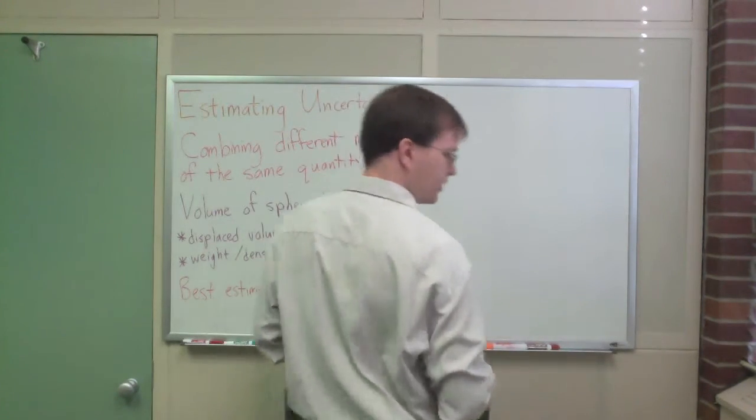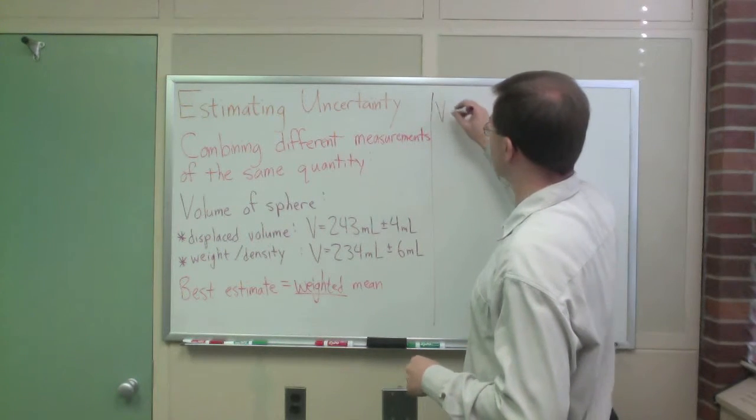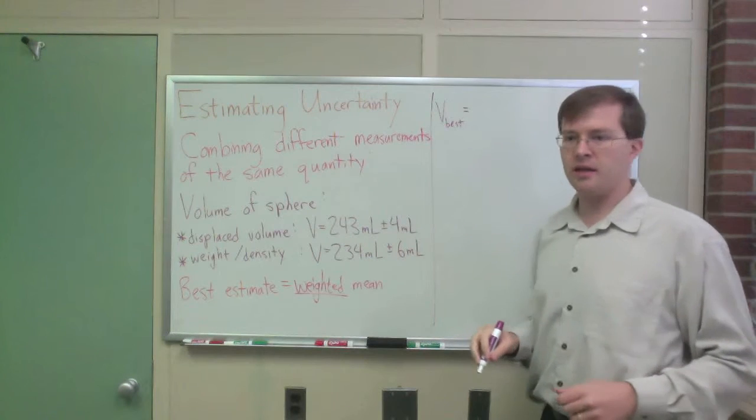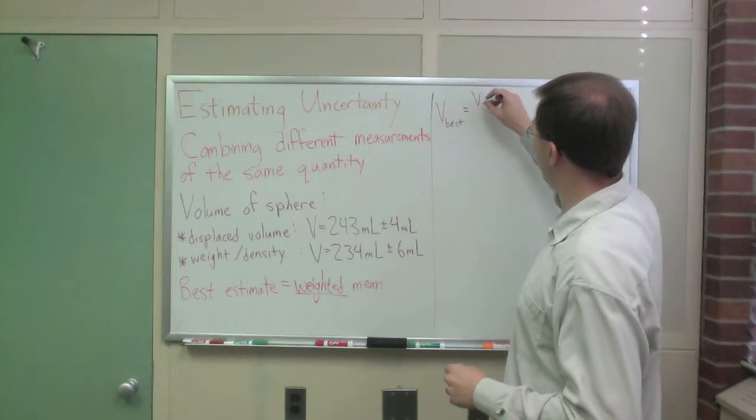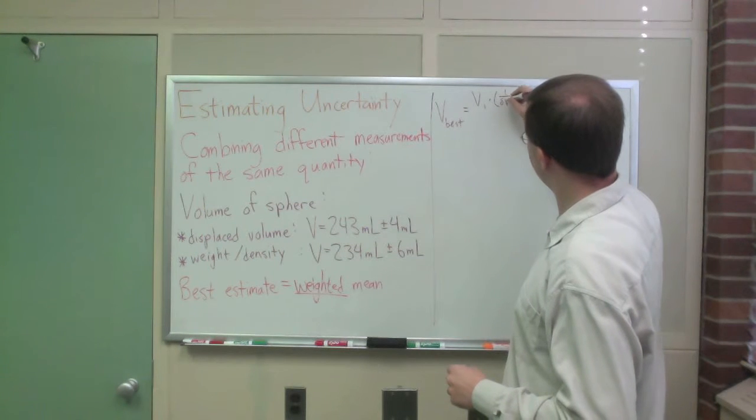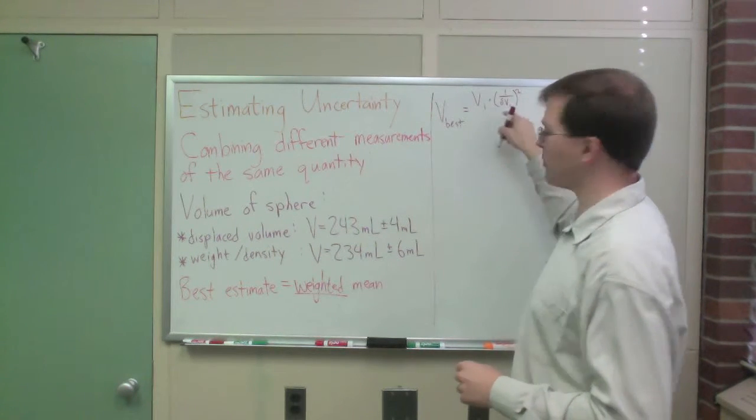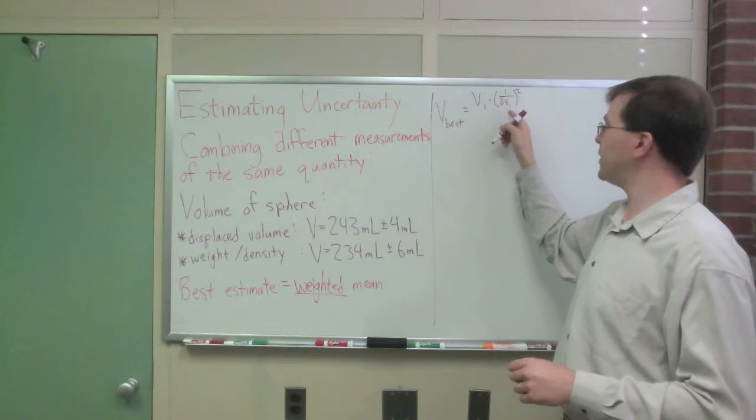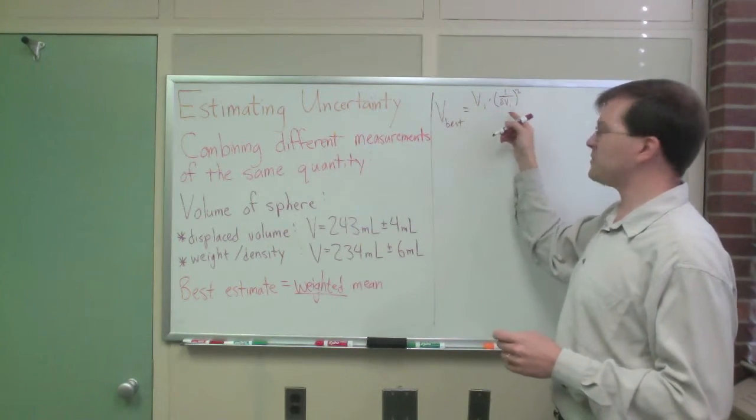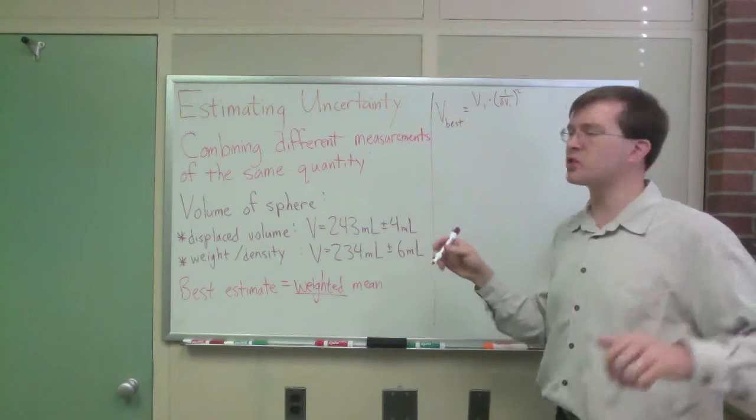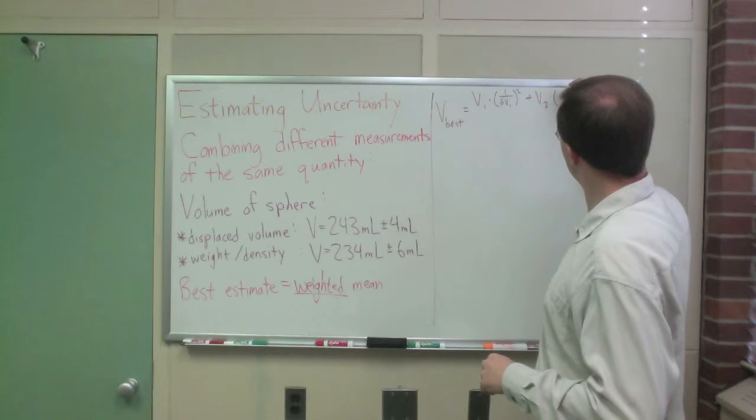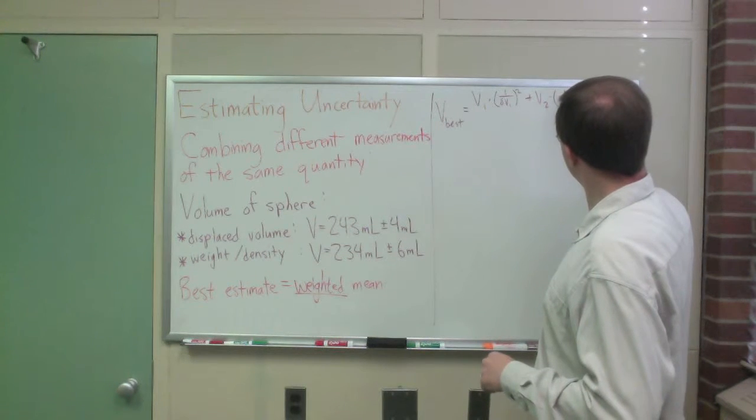So, in particular, what we're going to say is my best estimate for the volume is going to be V1 times 1 over delta V1 squared. Remember delta, that's Greek letter delta, lowercase delta. Delta V is the uncertainty in V. So, V1 times the weighting factor is 1 over its uncertainty squared plus V2 times 1 over delta V2 squared.